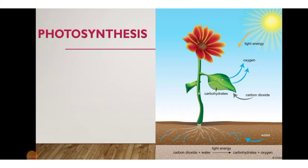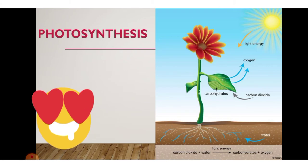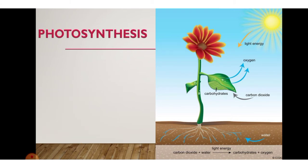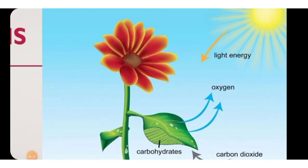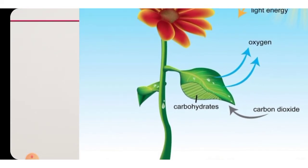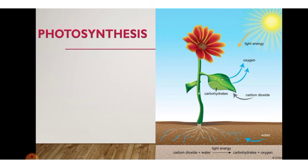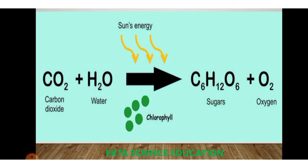Now let's learn about the process of photosynthesis. As the name suggests, 'photo' means light and 'synthesis' means to prepare or make. In the presence of sunlight, green plants make their own food material — that process is called photosynthesis. Green plants make their own food with the help of sunlight and the chloroplast pigment, with an exchange of carbon dioxide and oxygen gases.